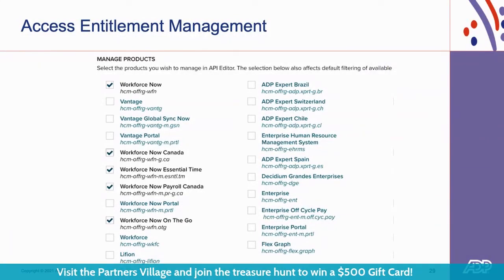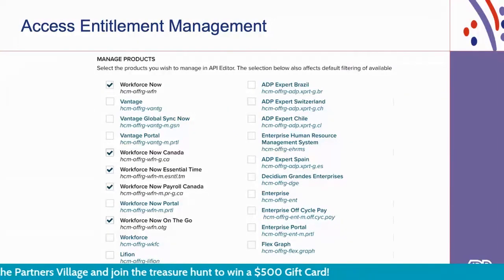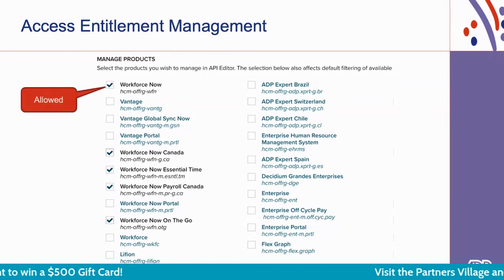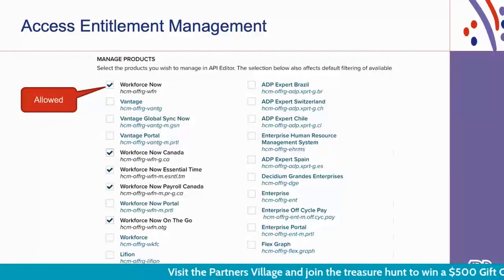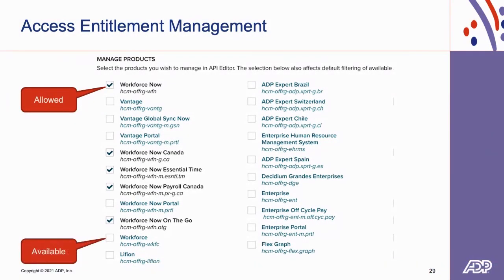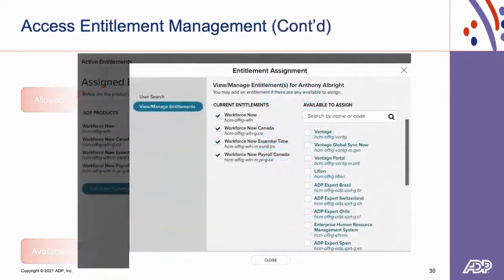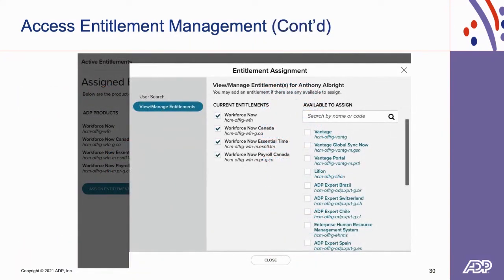Finally, here are a couple of access management screens. This one shows the product entitlements assigned to a given user or group by an API registry administrator — you can see the number of products selected, which could be standalone products or products within a certain geopolitical region. Once product access is assigned, entitlements can be further granularized for a specific user: on the left you see what's already assigned, and on the right the products available to assign, so entitlements can be further refined.